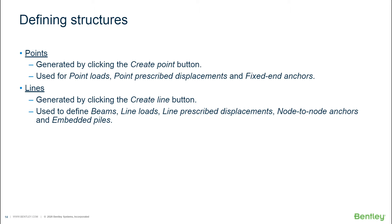Apart from points, we have lines. Just like with points, many things work similarly — you just click the button to create a line. To define a line you need two points, so you click directly on the drawing area. Just like with points, it is possible to assign a feature to the line directly: a line load, a line prescribed displacement, a node-to-node anchor, an embedded beam element, or a plate element. In Plaxis 2D, these structural elements — footings, excavation walls — are defined as line elements and can be created directly from the graphic interface.